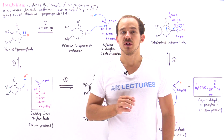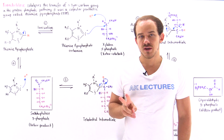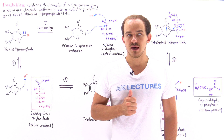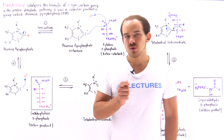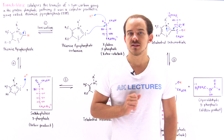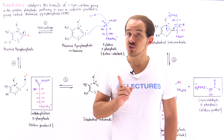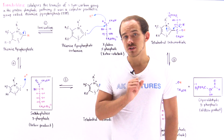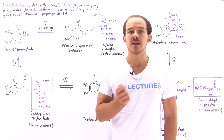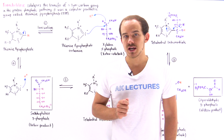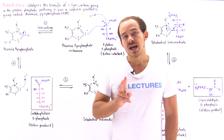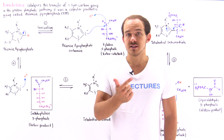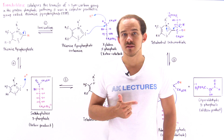The pentose phosphate pathway consists of two phases: the oxidative and the non-oxidative phase. Previously we focused on the non-oxidative phase, where two important enzymes catalyze that particular phase. These two enzymes were transaldolase and transketolase.